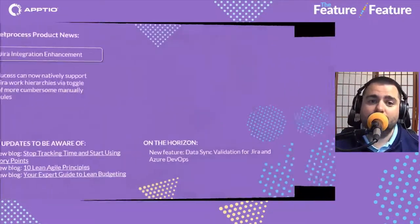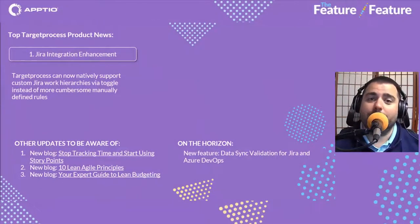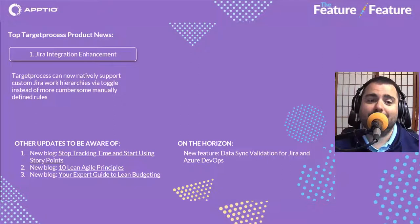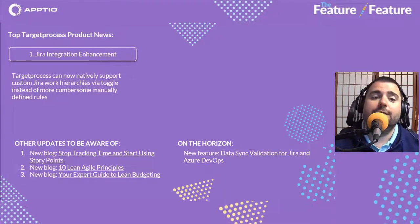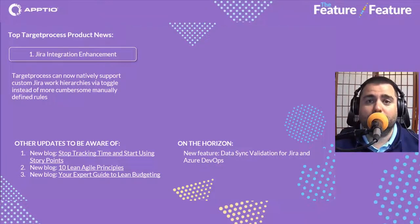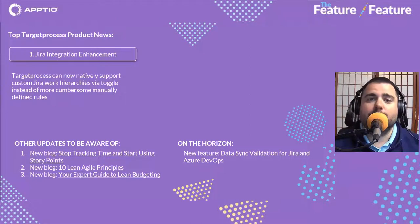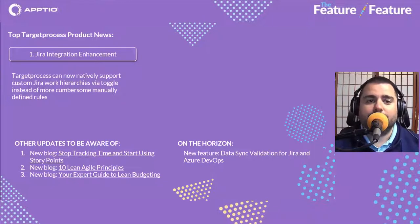For Target Process product news, the first thing to talk about is the Jira integration enhancement, where it can now natively support Jira custom work hierarchies via a toggle instead of a more cumbersome manually defined rule process. This really shortens that capability to surface your information within Target Process — a pretty major enhancement that's exciting to see come to the solution.